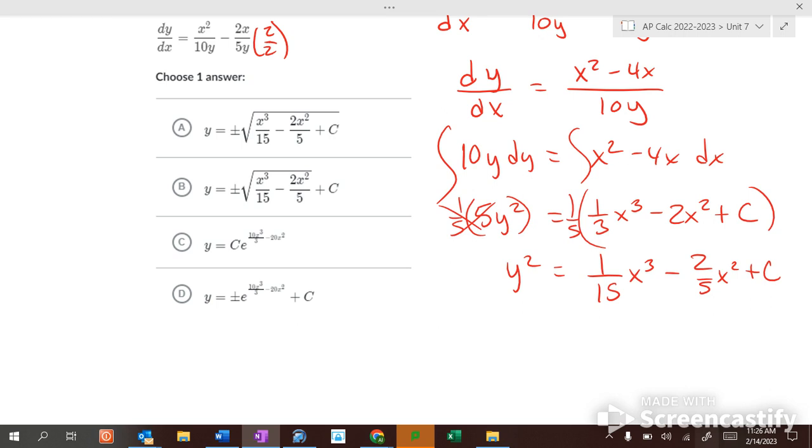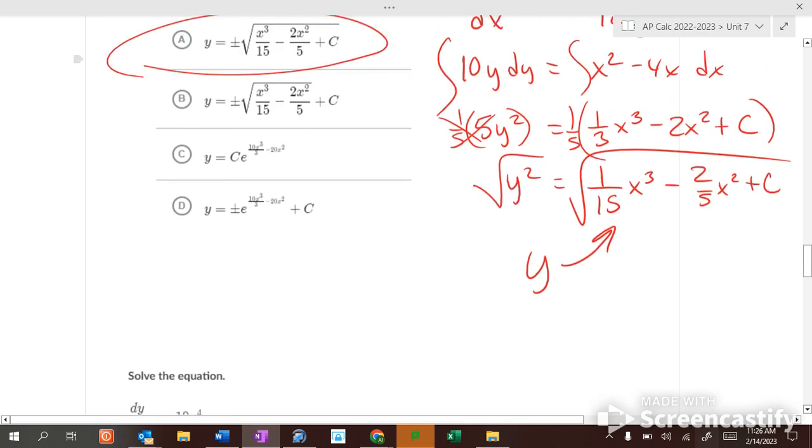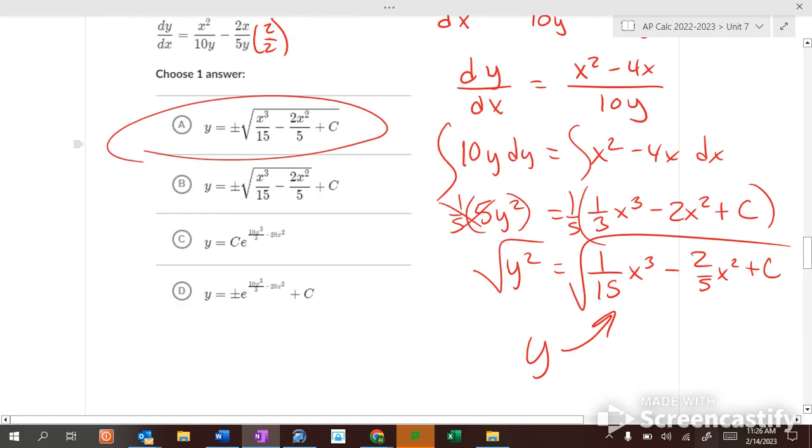Then what do you do to each side? Take the square root. So y should equal that, which is that. Because you need the plus or minus. You guys are getting good at this. But this one, the c is on the outside. So it's got to be on the inside.